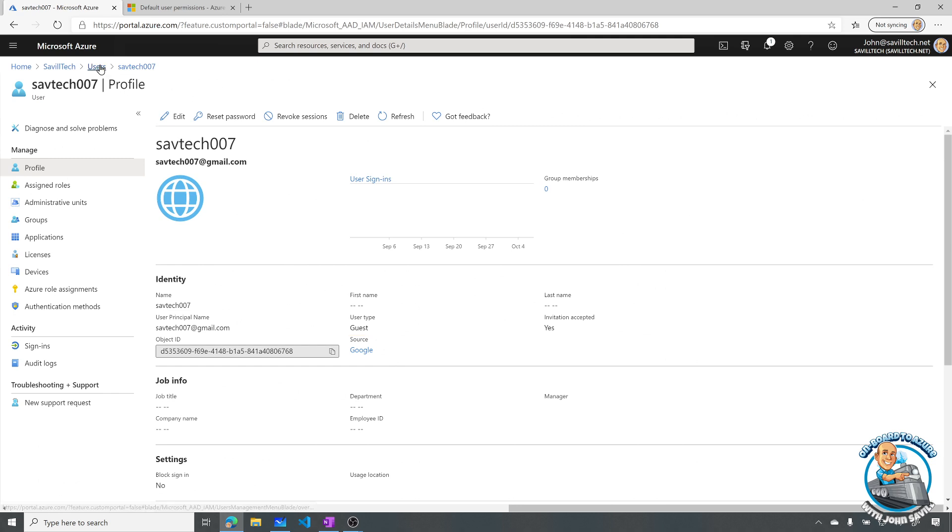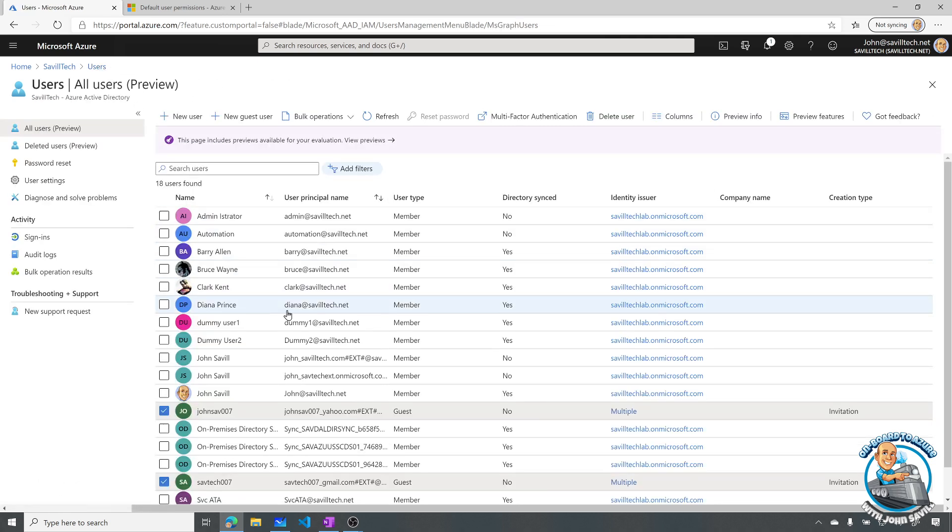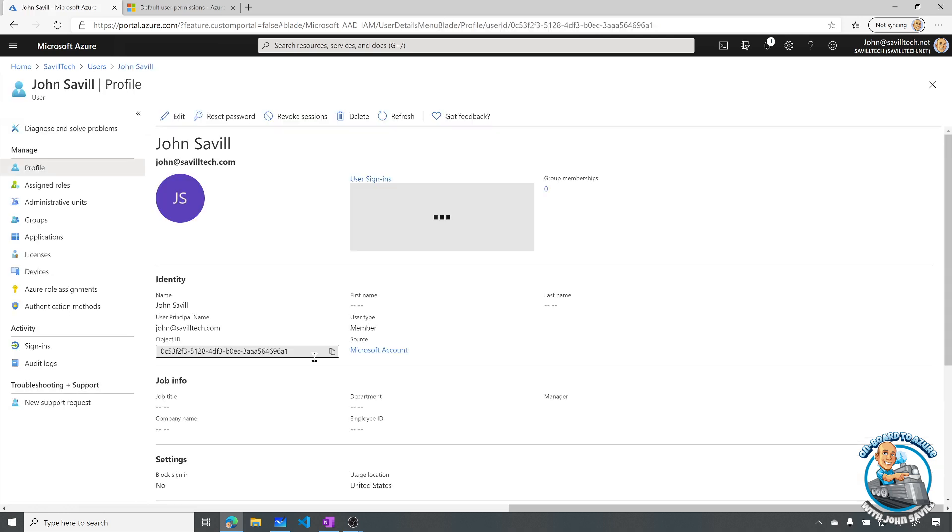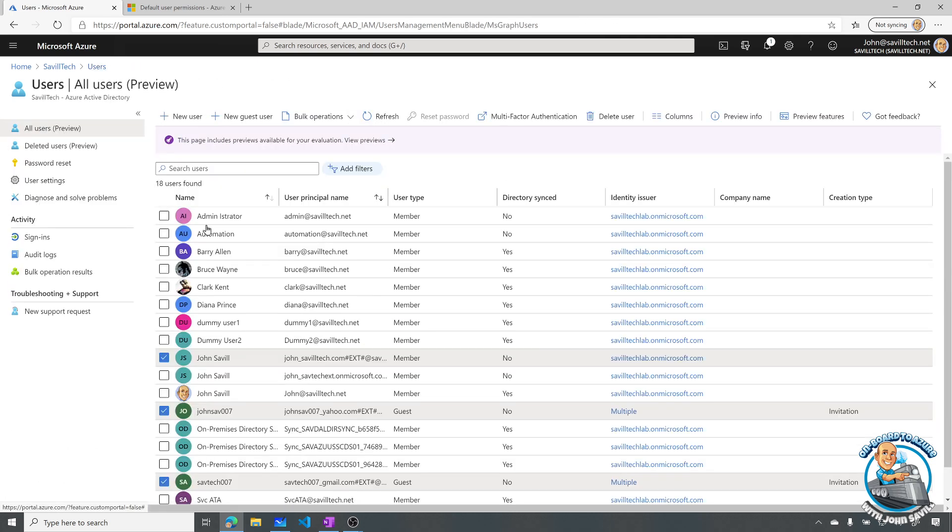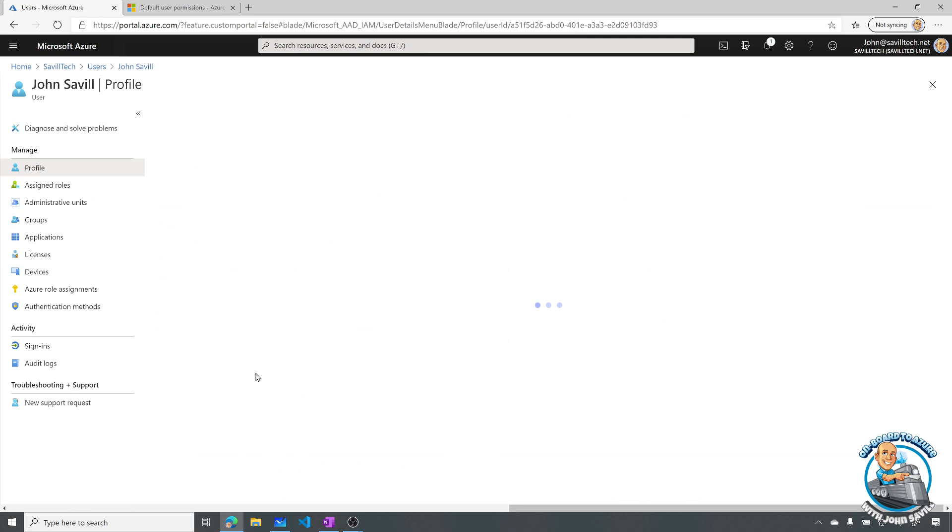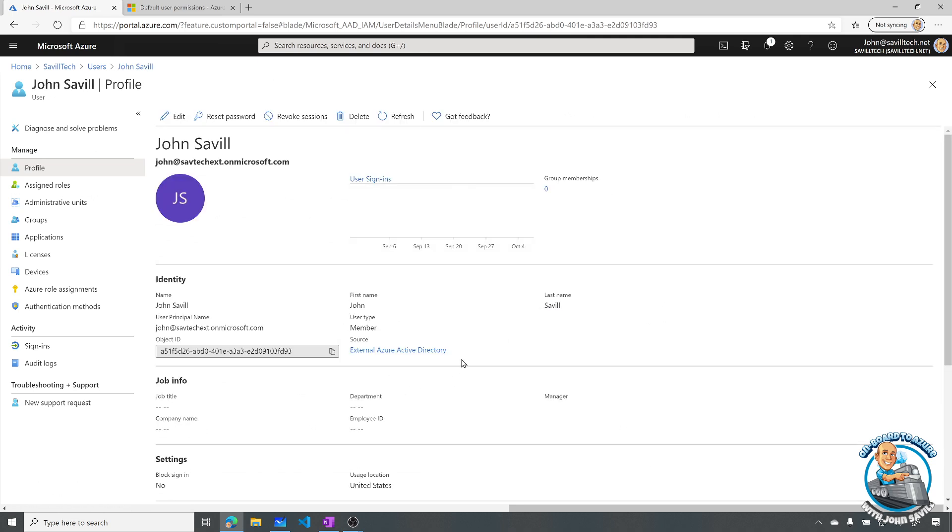But I have other users. I have ones that for example are just Microsoft accounts. But that Microsoft account I can see hey yeah look the source is Microsoft. But it's a member. I have other accounts that come from a completely different Azure AD. So we can see this is an external Azure Active Directory. But it's user type member.